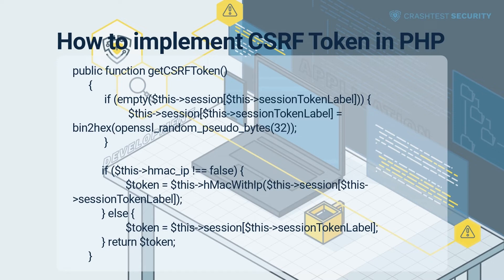First, create a form footer script on the landing page that invokes security service — the PHP class that generates the token and initiates the PHP session. Security service writes the token used to validate the request and loads the token in a hidden field. A typical security service PHP configuration would look similar to the code shown in the video.